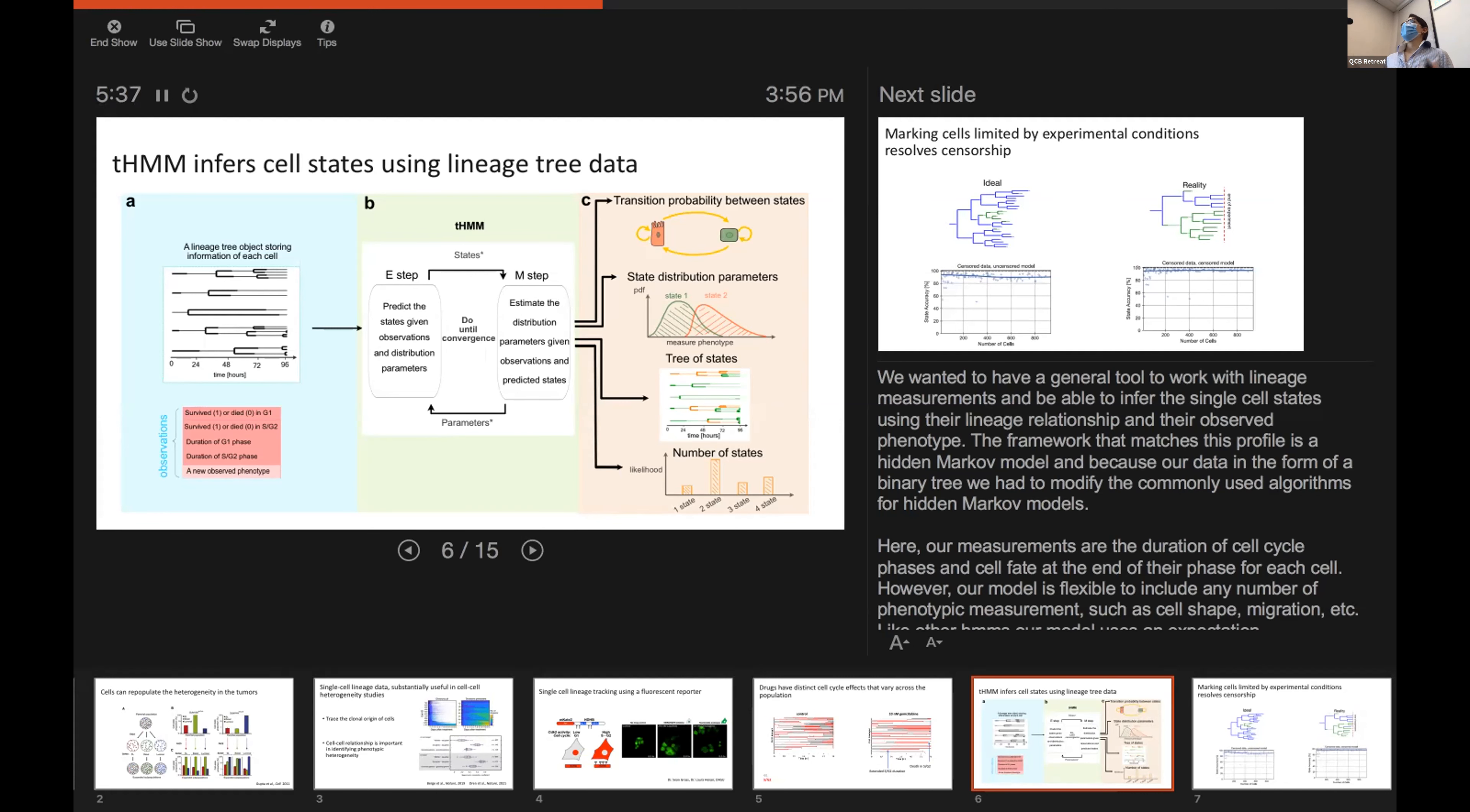Like other HMMs, we use the expectation maximization in order to predict the single cell states and also to estimate the distribution parameters corresponding to each of those states. And so, we do the E-step and M-step until convergence.